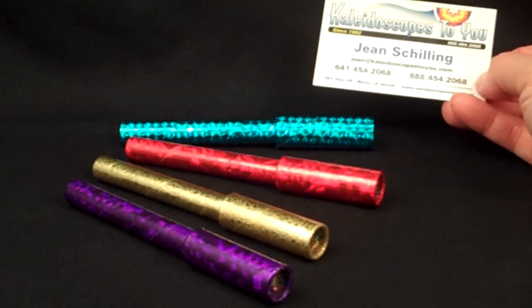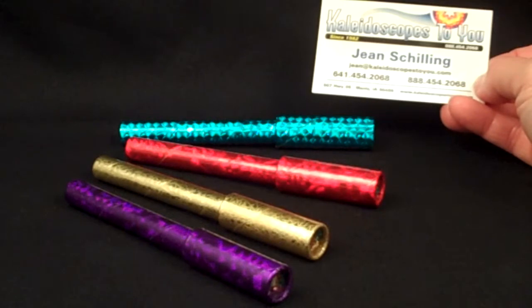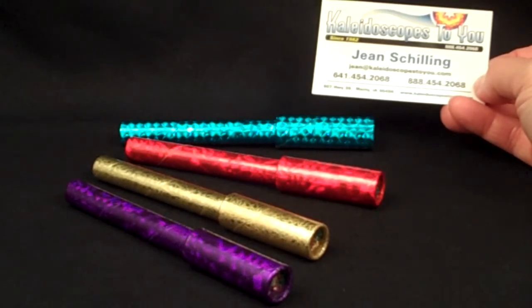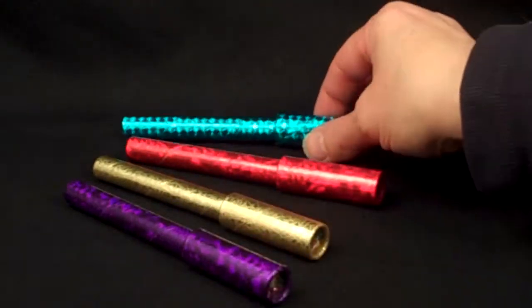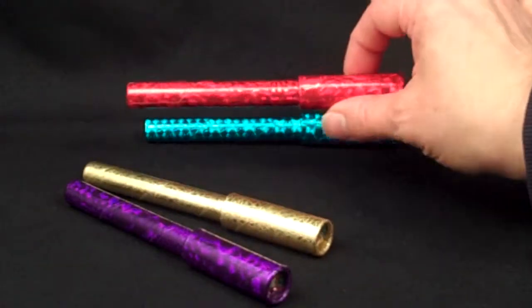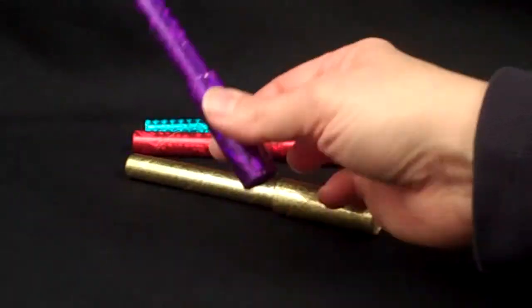If you're viewing this directly on YouTube, please refer back to our main website at Kaleidoscopes2U.com. The Teeny Weenies come in four different colors: light aqua, red, gold, and purple.